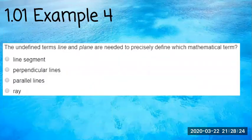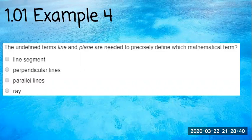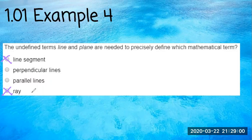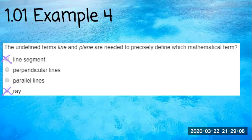Number four: which mathematical terms need the undefined terms 'line' and 'plane' to be precisely defined? You need 'line' for line segment, but not 'plane.' Ray has nothing to do with a plane. That narrows it to perpendicular lines and parallel lines. Perpendicular lines can be in the same plane or not, but parallel lines must be in the same plane — so the answer is parallel lines.